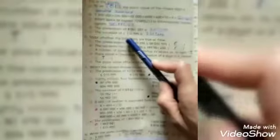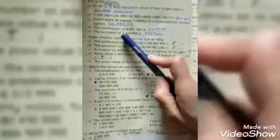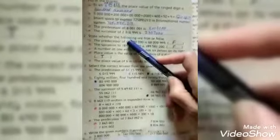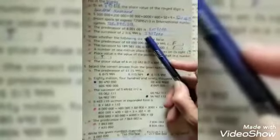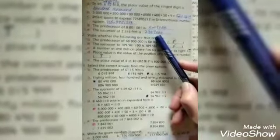The successor of 2316999 is... we have a successor, the next number is 2317000.